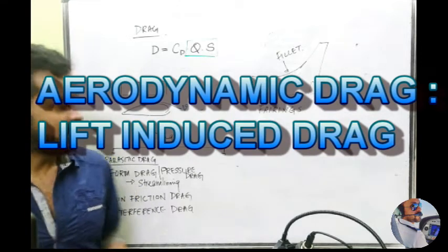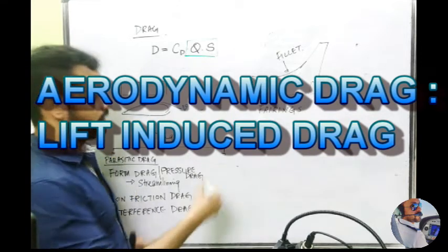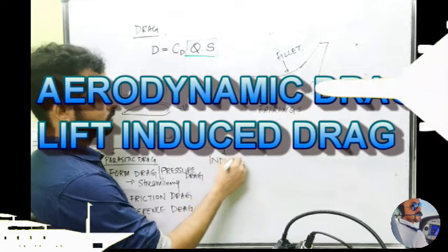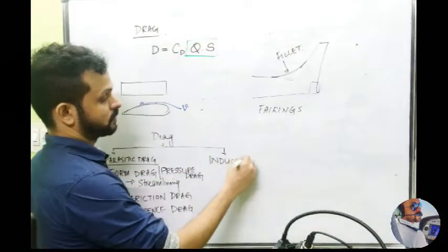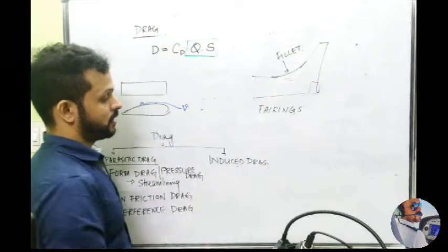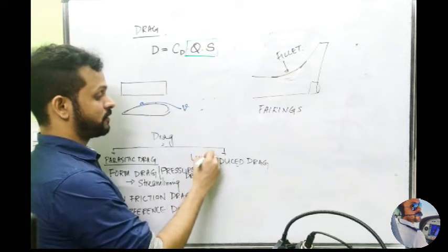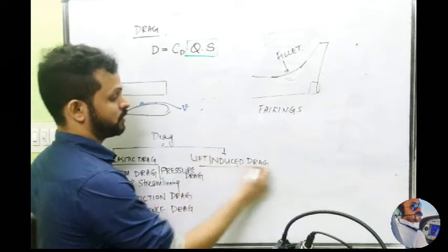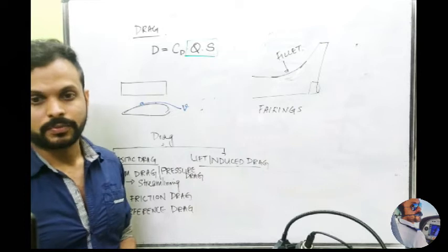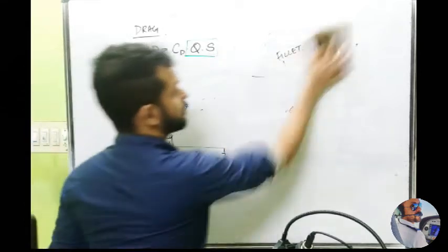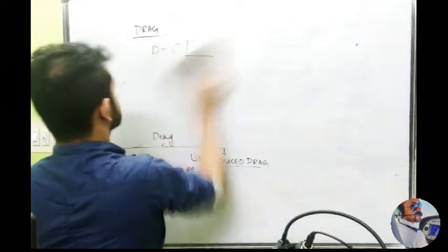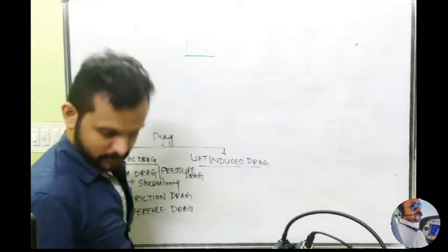The second type of drag is even more interesting — it's called induced drag. To make it more clear, I would add the word 'lift' in front of that: it's called lift-induced drag.